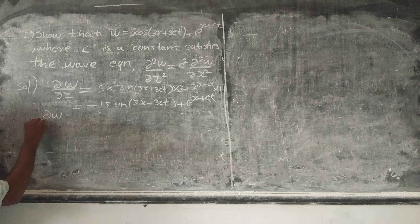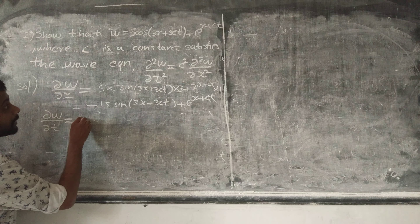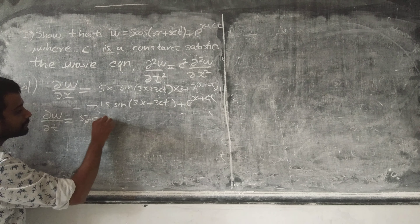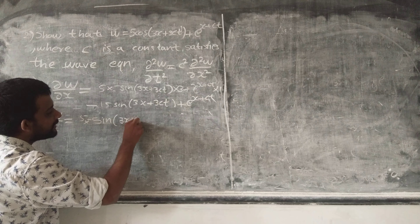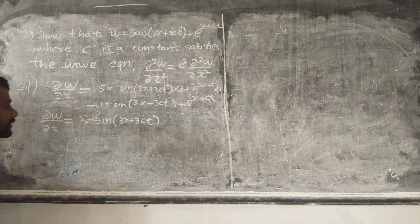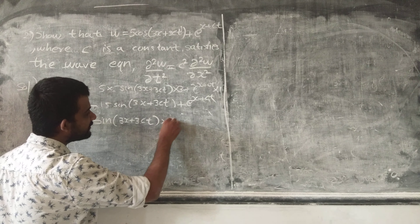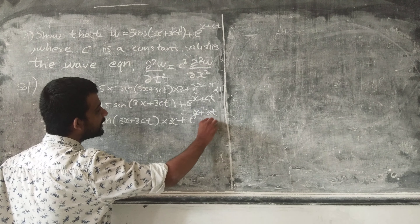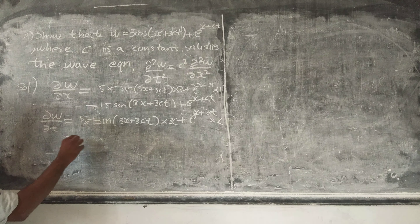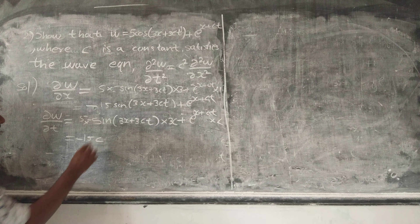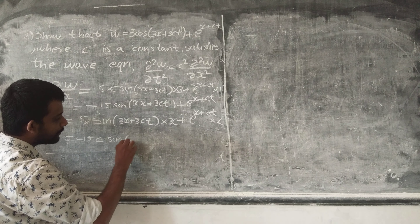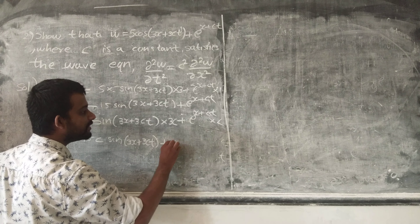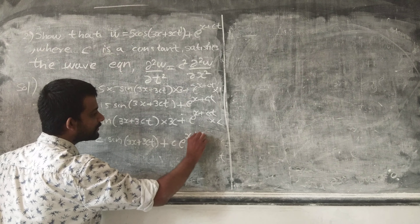Similarly, computing dou w by dou t: equals 5 times minus sine of (3x + 3ct) into 3c, plus e raised to (x + ct) into c. So dou w by dou t equals minus 15c sine of (3x + 3ct) plus c times e raised to (x + ct).